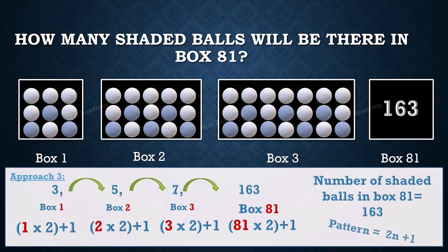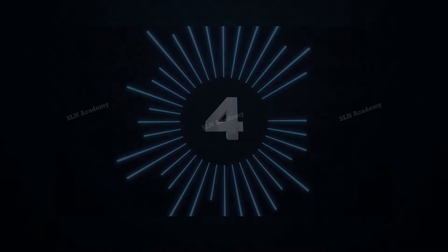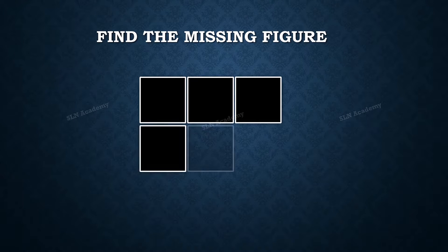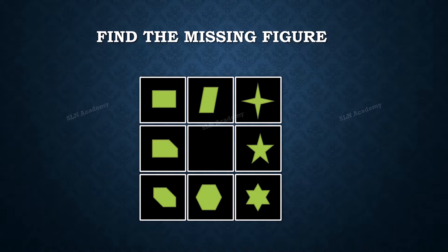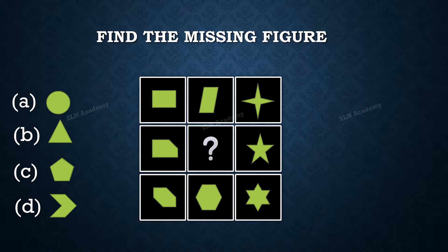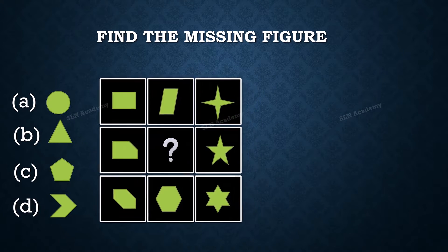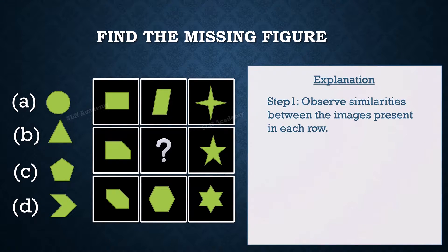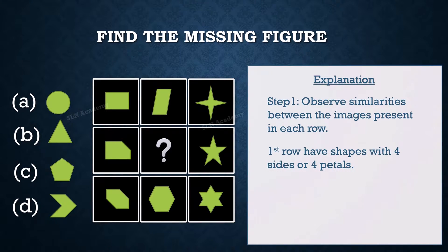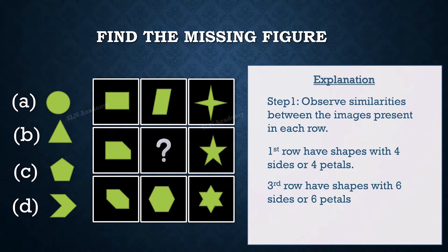The pattern is 2n + 1. Number 4: Find the missing figure. Observe the answers given. Step 1: Observe similarities between the images present in each row. The first row has shapes with 4 sides or 4 petals. The third row has shapes with 6 sides or 6 petals. And the answer is C.